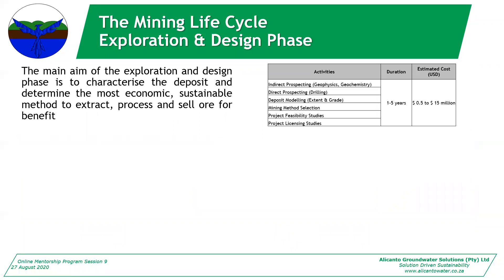In the exploration and design phase, your main aim is to characterize the deposit and determine the most economic, sustainable method to extract, process, and sell the ore. Activities include prospecting — both indirect through geophysics and geochemistry, and direct prospecting through drilling — deposit modeling of extent and grade, choosing your mining method, then project feasibility studies (pre-feasibility and bankable feasibility), and finally licensing studies: prospecting applications, mining rights applications, EIAs, EMPs, etc. This phase lasts between one and five years and can cost anywhere between half a million and $15 million.